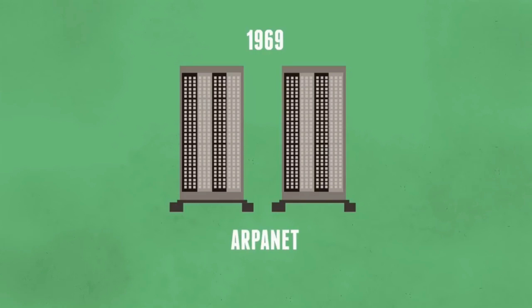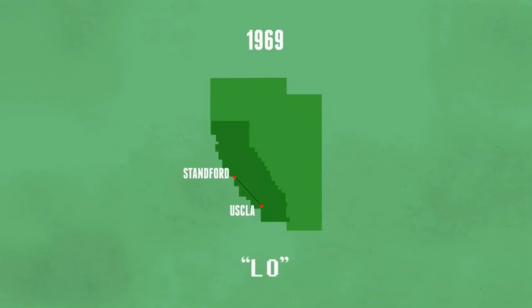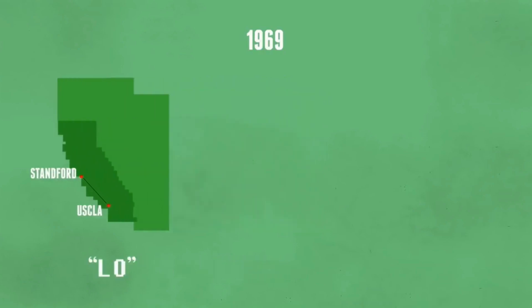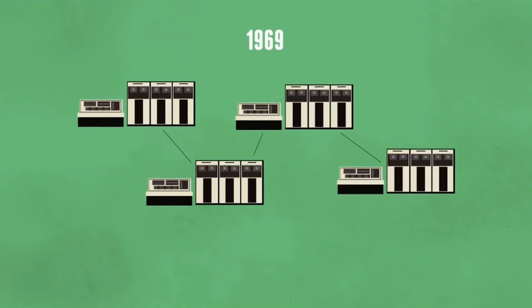ARPANET stands for Advanced Research Projects Agency. One was located in a research lab in UCLA, and the other at Stanford. All the message said was 'log in,' and it didn't fail to crash the network. Stanford only received the first two letters of the message, but hey, you gotta start somewhere. By the end of the year, only four computers were connected to this network.